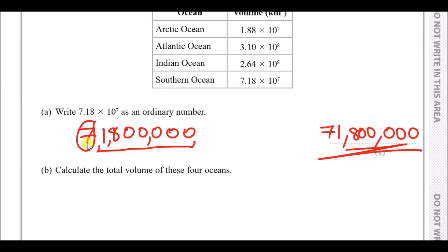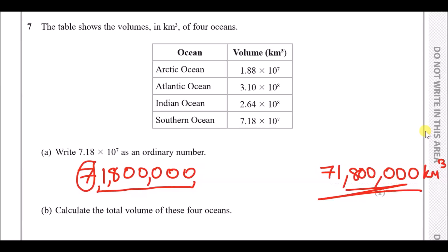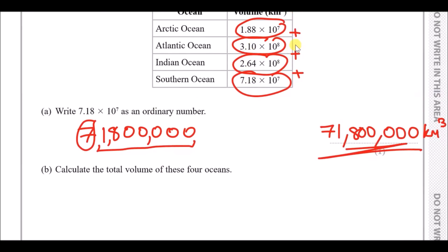Part b: calculate the total volume of these four oceans. You literally want to sum all of them up, so write out each value with plus signs between them and put it in the calculator. You should get 664,600,000 kilometers cubed — that's six hundred and sixty-four million, six hundred thousand kilometers cubed.